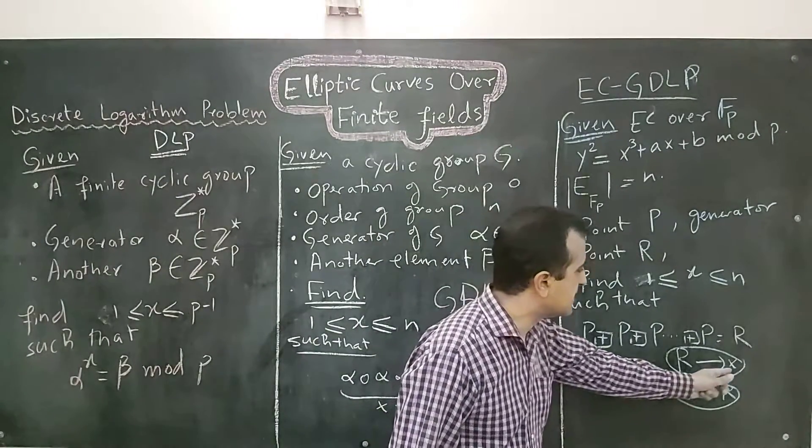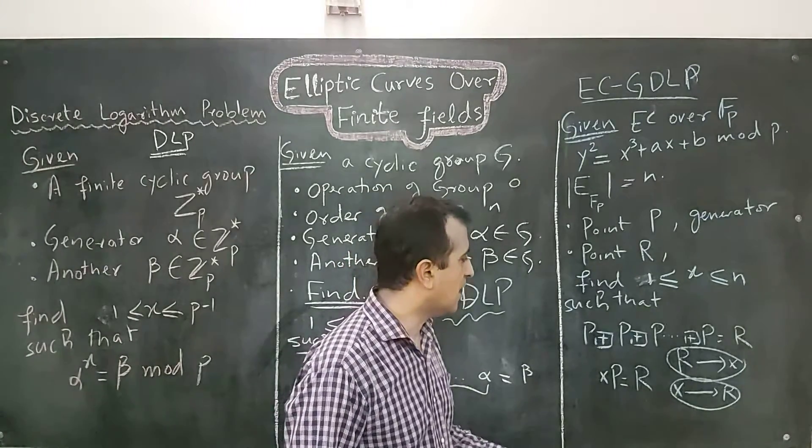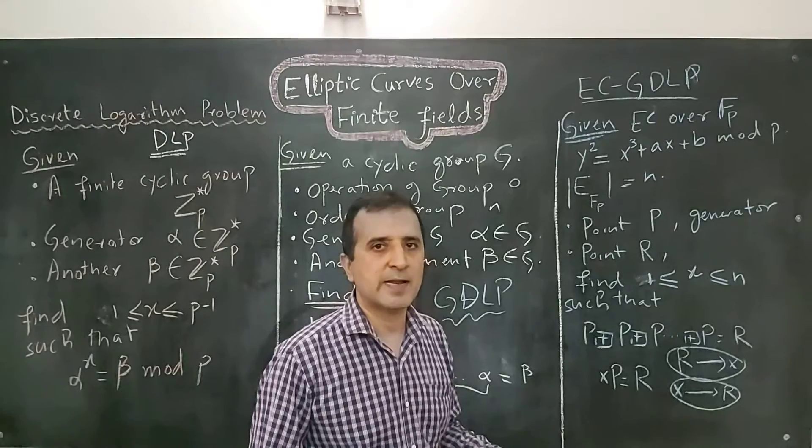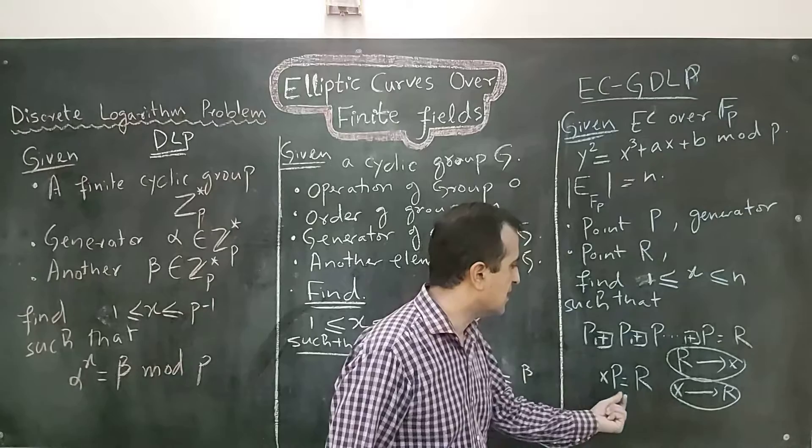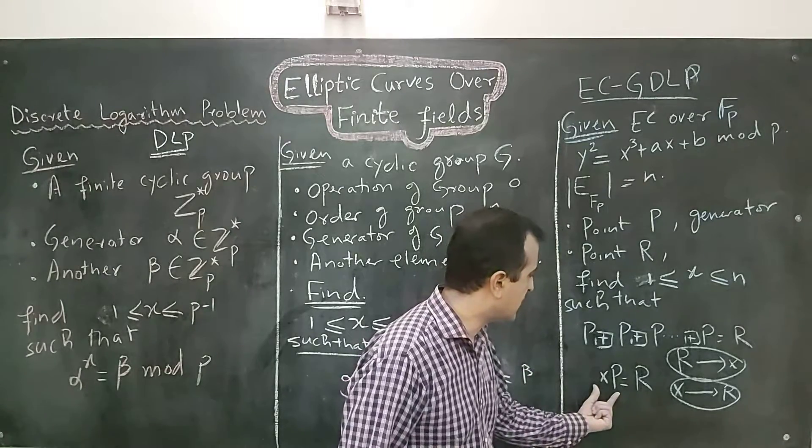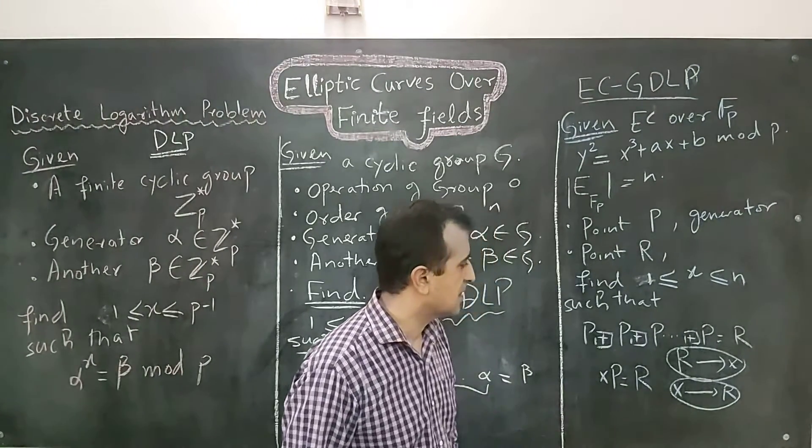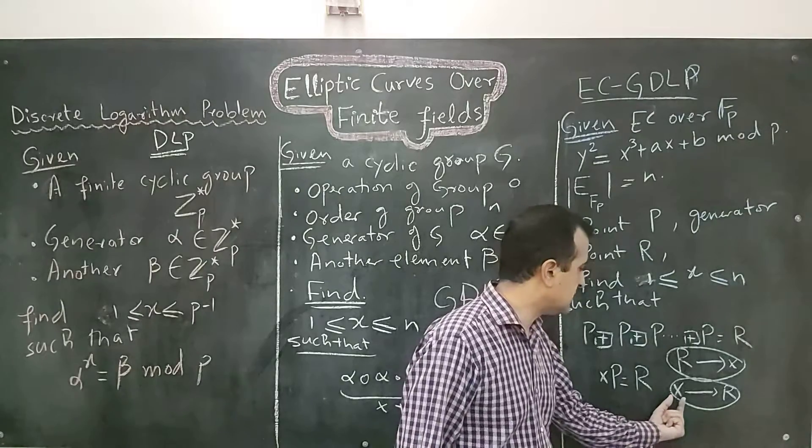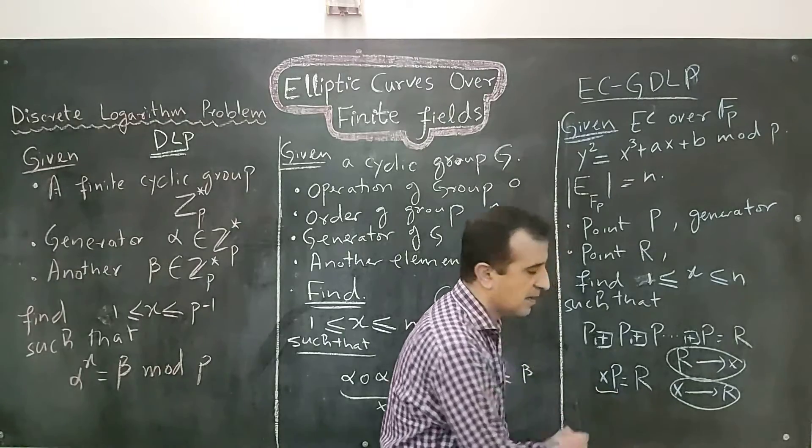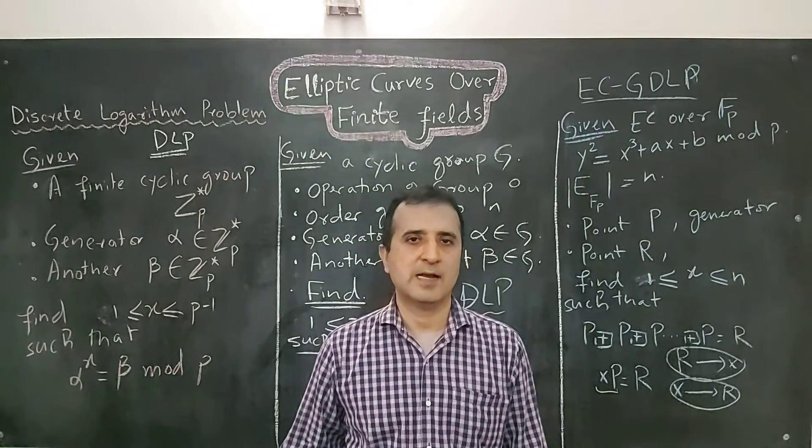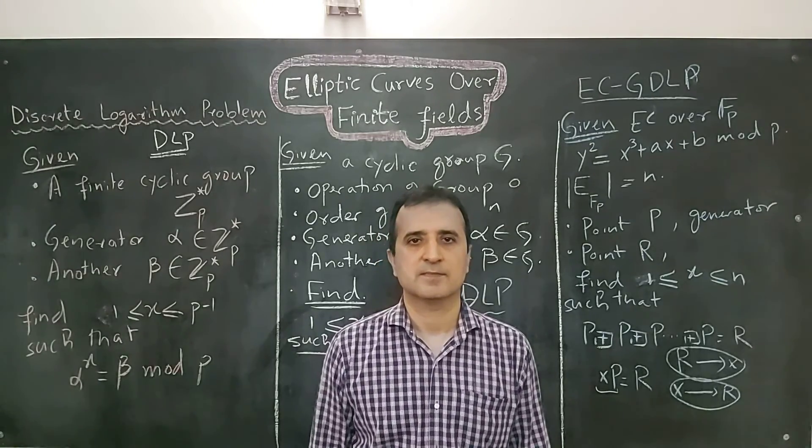So, given R, finding x is difficult because we have to use brute force. We have to check all possible x's to find the appropriate x that when used with P, it makes R. So, maybe it could be 1P or it could be like 100P. We don't know it. We have to try all possibilities. Whereas, when we already know x, then finding R is easy. Because we can compute xP using double and add algorithm. And we know that double and add algorithm works in polynomial time.